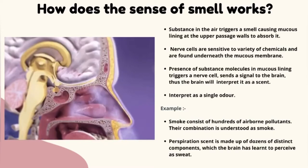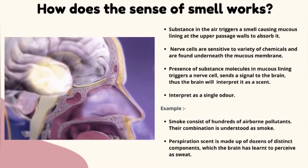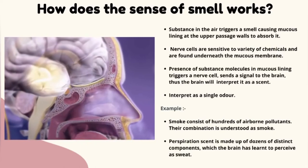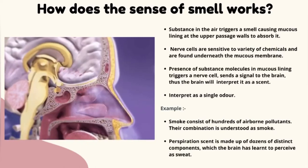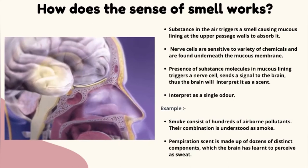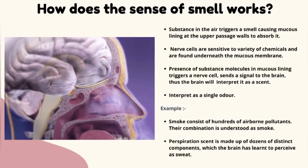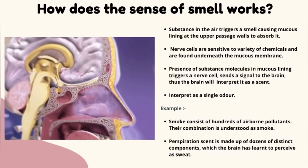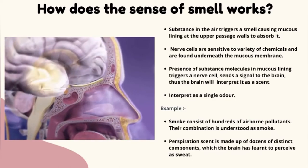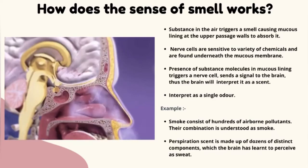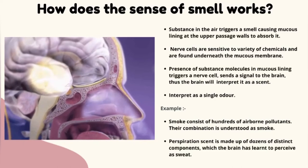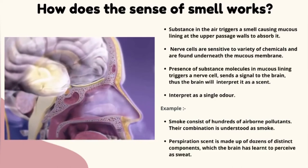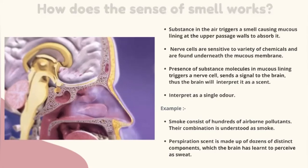Most smells are composites, combining signals of several cells responding to various chemicals and interpreting them as a single odor. Smoke, for example, may consist of hundreds of airborne pollutants, yet their combination is understood as smoke. Or, the scent of perspiration is made up of dozens of distinct components, which the brain has learned to perceive as sweat.